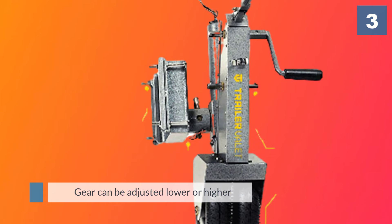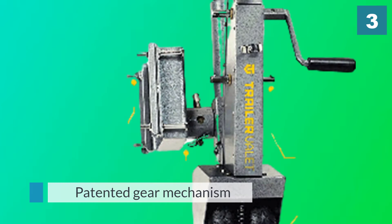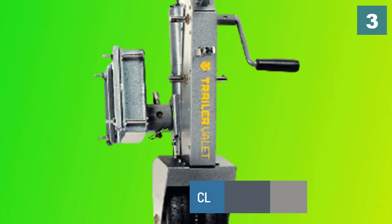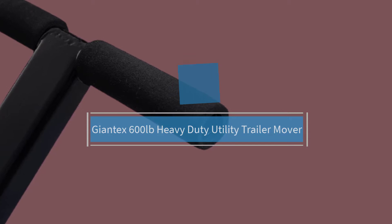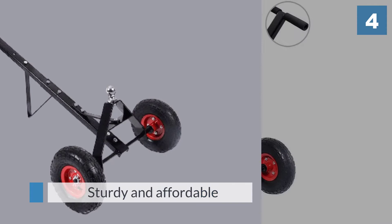Number four: Giant X 600 pounds Heavy-duty Utility Trailer Mover. The Giant X heavy-duty trailer dolly is a convenient option for those looking for something fairly sturdy and affordable.